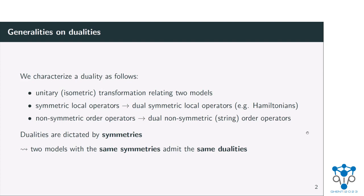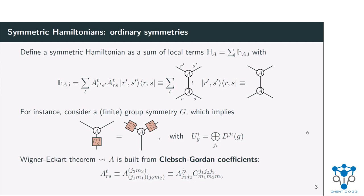One of the most important points to take away from this talk is that dualities are completely dictated by the symmetries of your model, which implies that any two models with the same set of symmetries will admit the same kinds of dualities. To get a feeling for how this works, let's consider some symmetric Hamiltonian written as a sum of local terms in standard tensor network notation — I'm assuming a two-body Hamiltonian for simplicity, but the only thing that matters is that it's local. If this Hamiltonian is symmetric with respect to some symmetry group G, there is some representation of the group that commutes with these local tensors, and such a representation is built from irreducible representations.